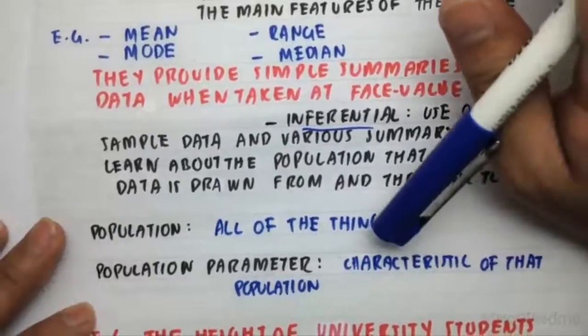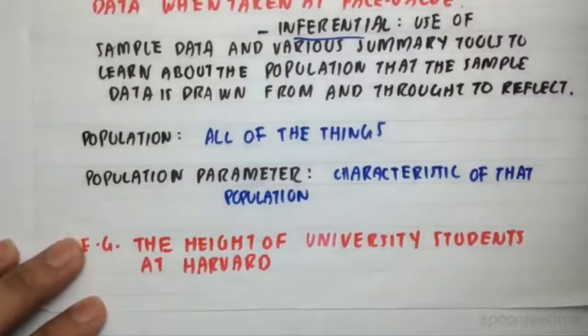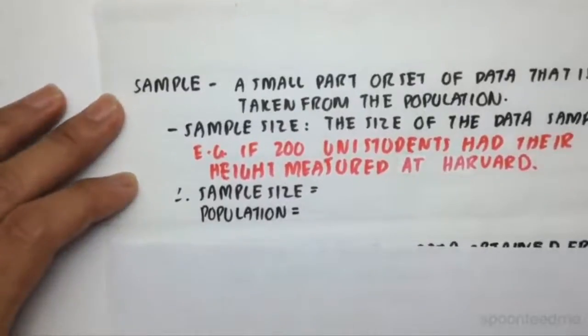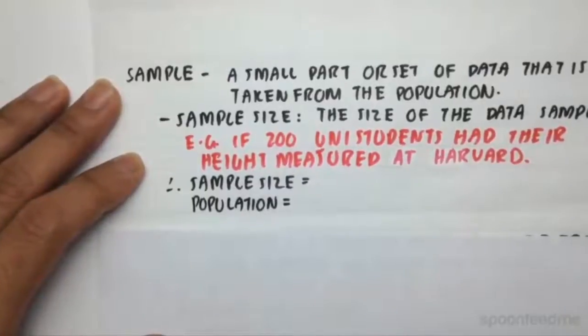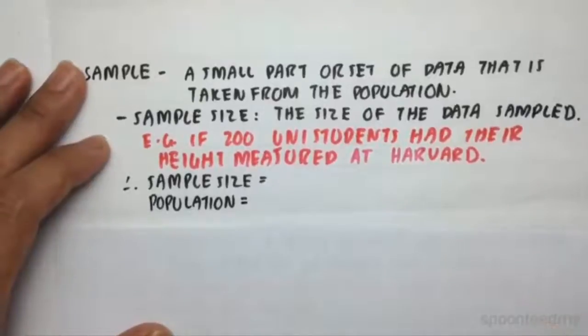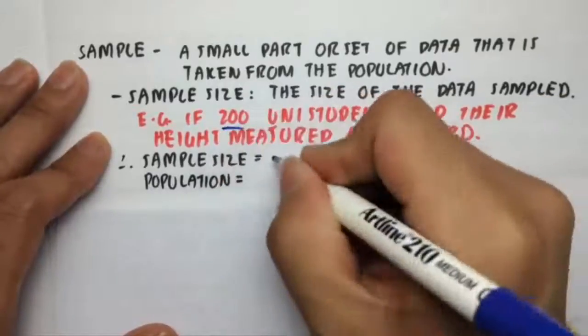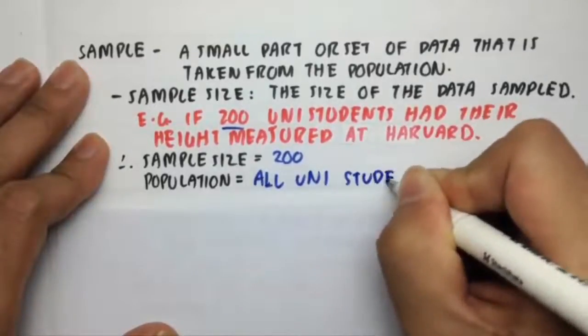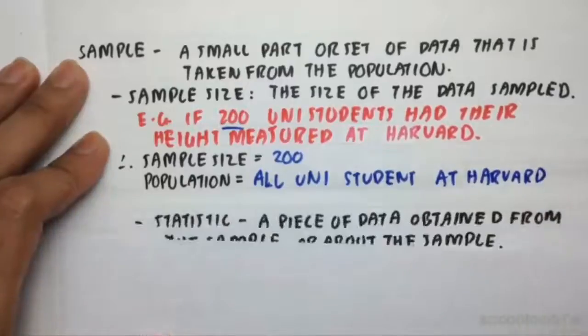So then, if I give you an example, the height of university students at Harvard. So first I'll just define what a sample is. A sample is a small part of a set or data that is taken from the population. And then the sample size is the size of the data that we've taken.